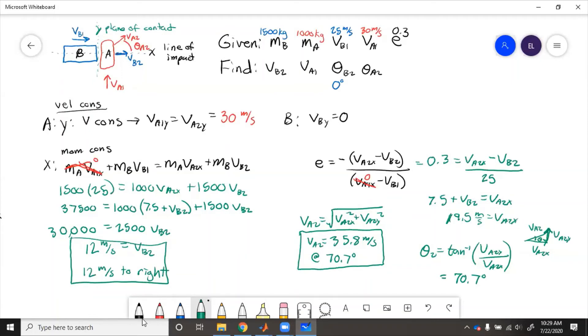So to recap what we did for this problem, we have the diagram. Then we identified the objects and what directions they were moving. We put in the line of impact and plane of contact for our X and Y coordinate frame. Then we checked Y direction for velocity conservation, X direction for momentum conservation, and then we solved out for the unknowns.